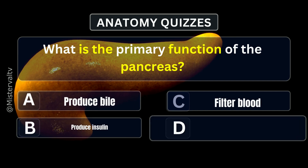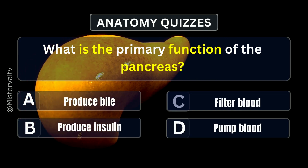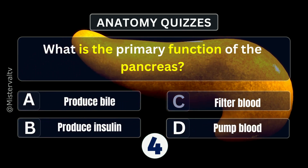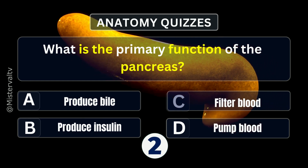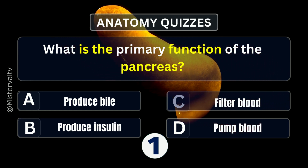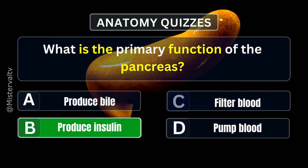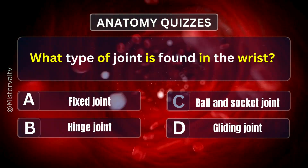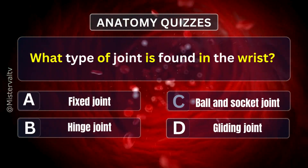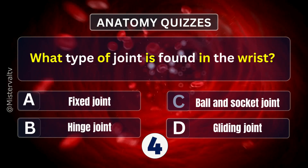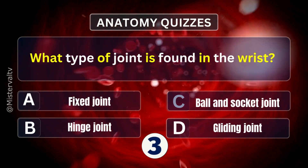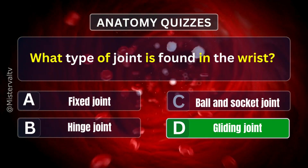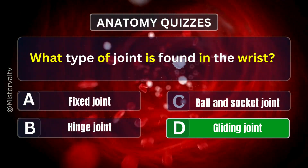What is the primary function of the pancreas? Answer. B. Produce insulin. What type of joint is found in the wrist? Answer. D. Gliding joint.